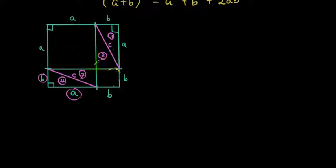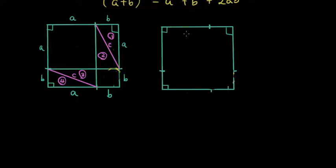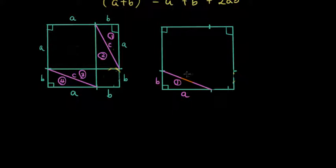Now I'm going to peel these triangles off and paste them again in the same size square with a different arrangement. You can see here it's an empty square of the same size, and I'm going to step by step paste each triangle in. The first triangle I'm going to paste over here — this is triangle number one, with sides B, A, and C. Two shorter sides A and B and side C.